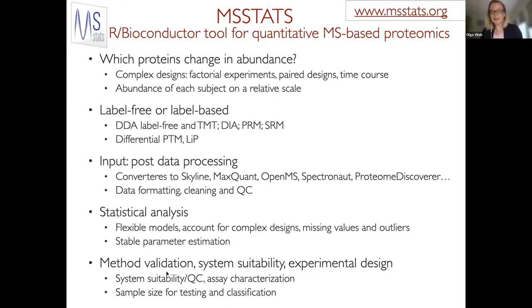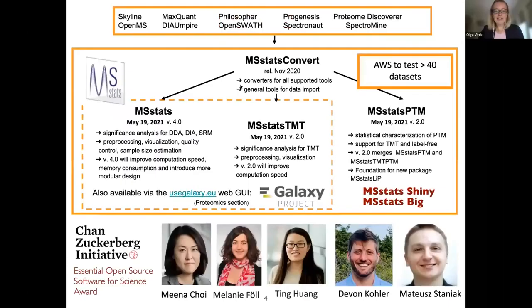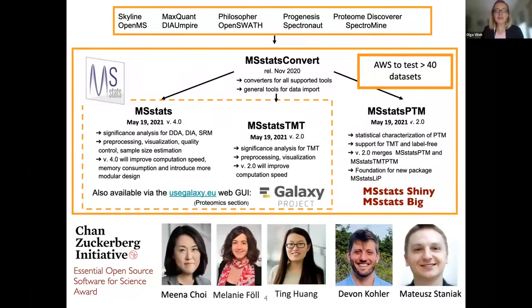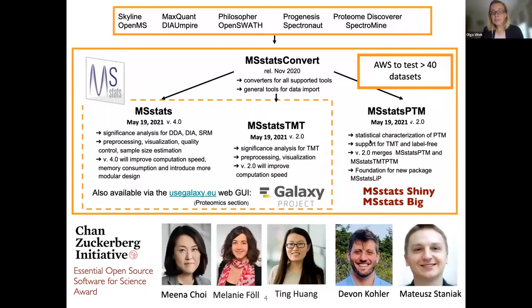Starting from a very simple question, it turned out to be a really substantial effort. MSStats is the umbrella name for an open source software — everything is done in R and Bioconductor. But MSStats is not a single package; it is actually a family of packages. There is a series of converters from different tools, and because the files are very large we have to work with data that does not fit in memory and require efficient data structures. There is MSStats for label-free approaches, MSStats TMT for labeling, and MSStats for post-translational modifications.